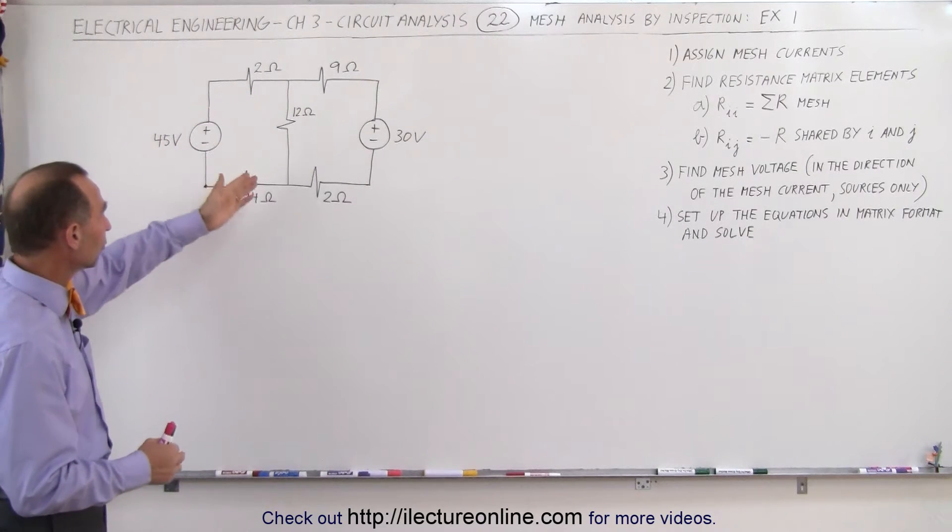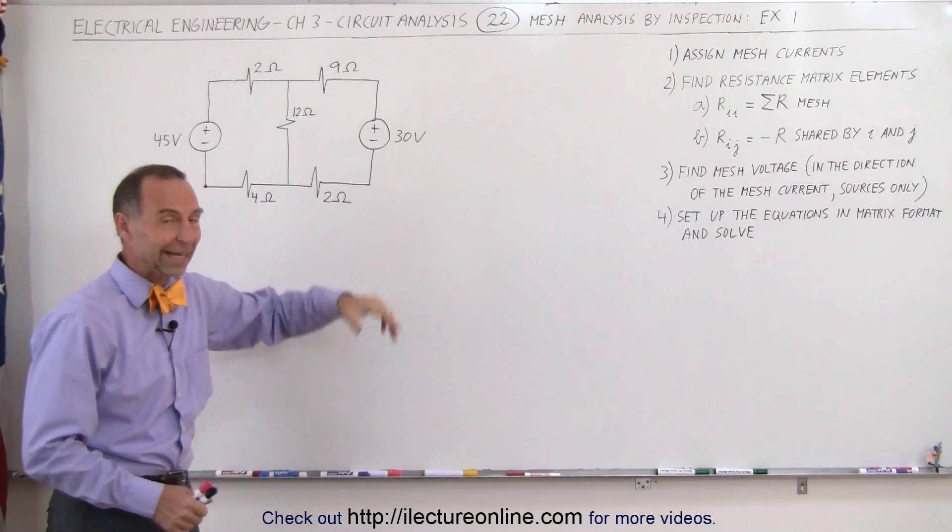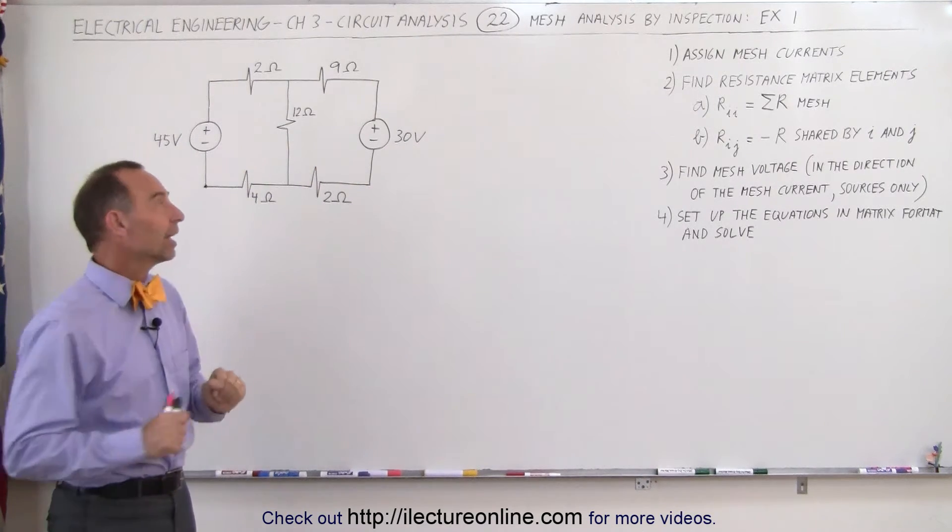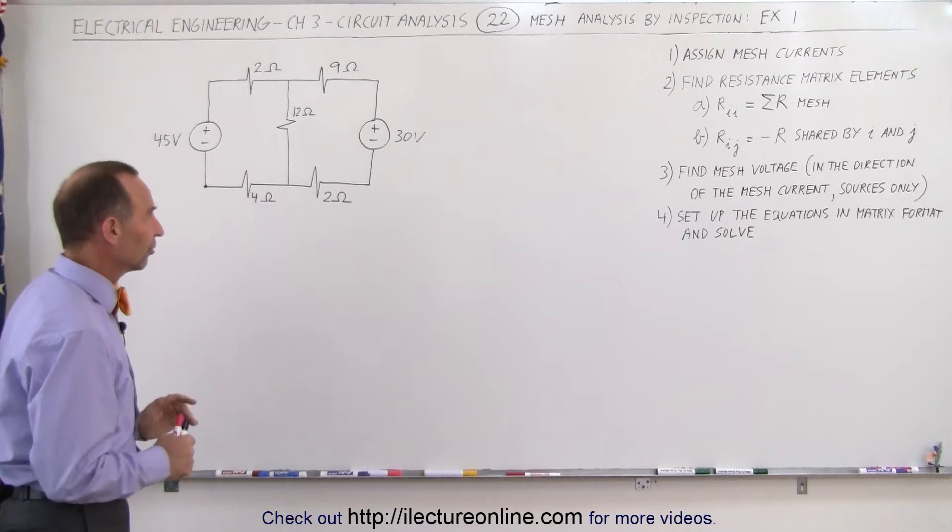We have a simple circuit with two meshes, two voltage sources—typically when you see voltage sources you take mesh analysis—and we have five resistors.